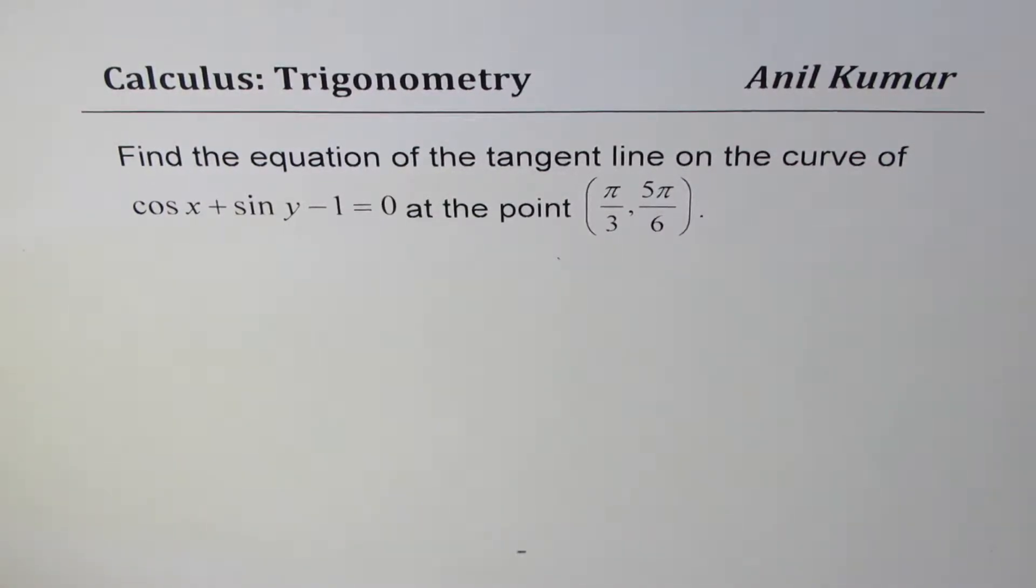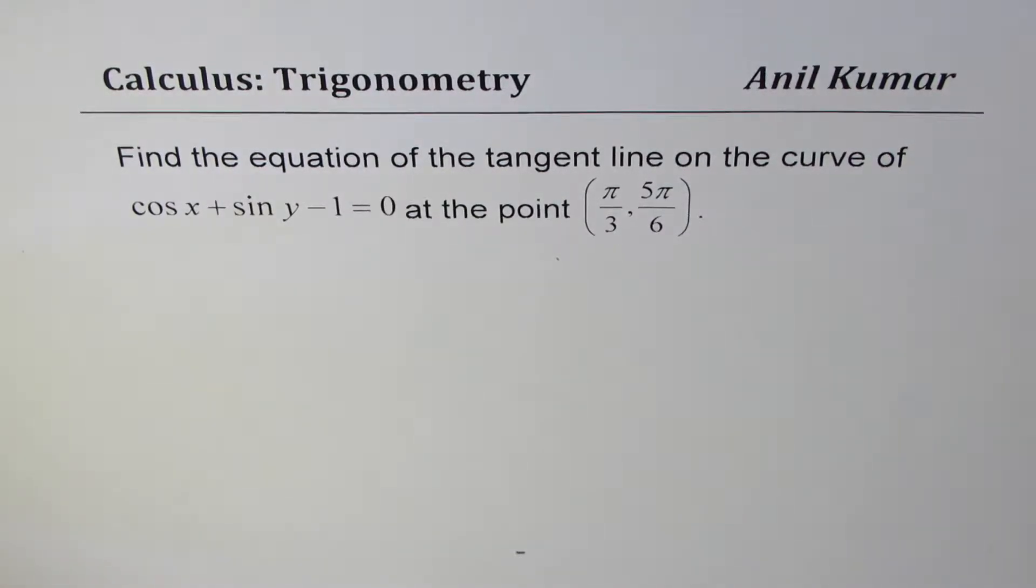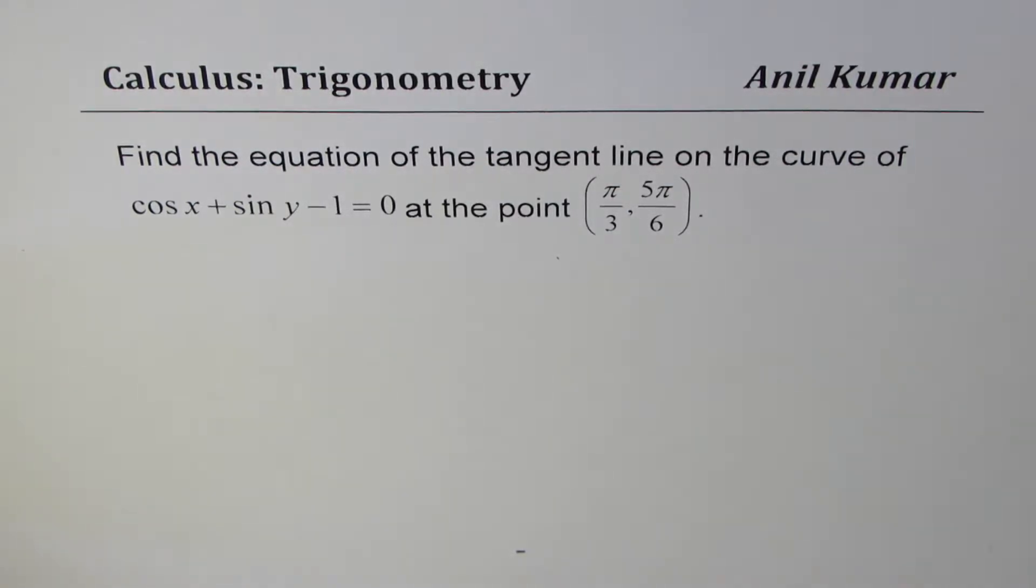I'm Anil Kumar sharing with you an application question where we are going to use implicit derivation on trigonometric functions. The question is: find the equation of the tangent line on the curve of cos x plus sin y minus 1 equals 0 at the point (π/3, 5π/6).